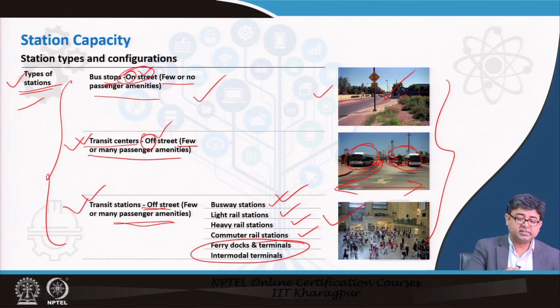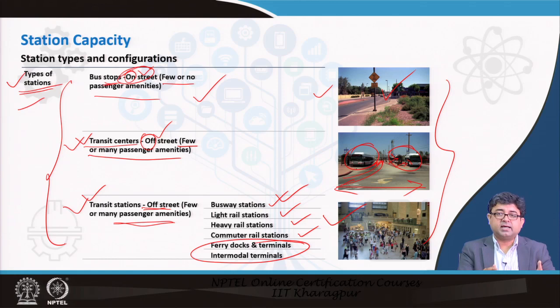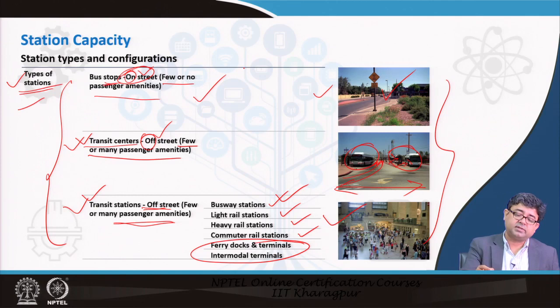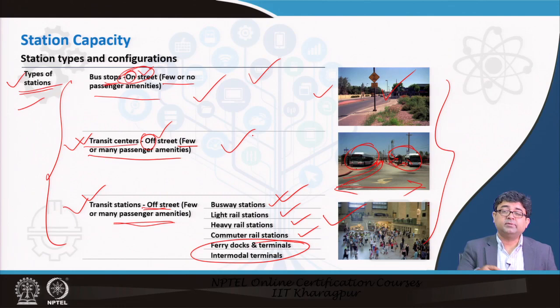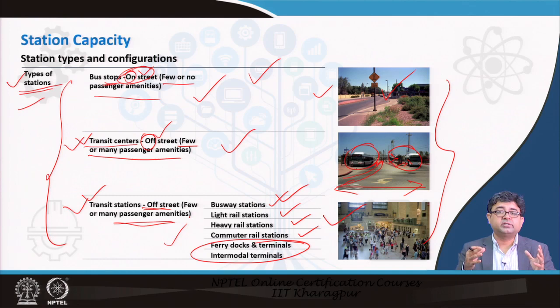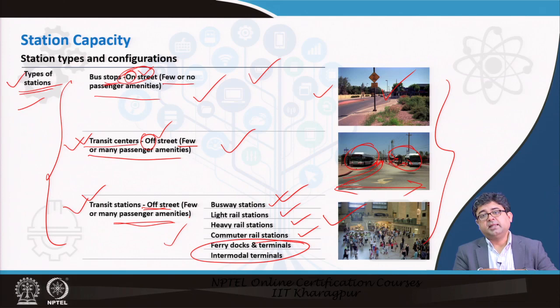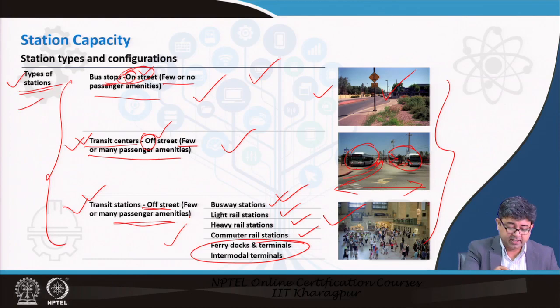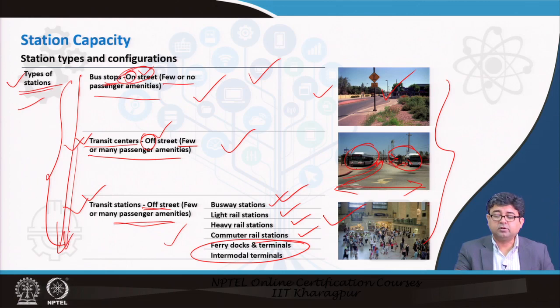Broadly, these are the three different types of stations you may come across. In terms of capacity, the on-street station may have the lowest capacity, the transit center a little bit higher, and the transit station the largest capacity — not only in terms of the number of passengers each bus can handle, but also purely the number of passengers that the facility itself can handle.